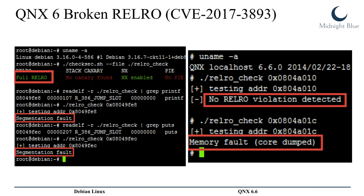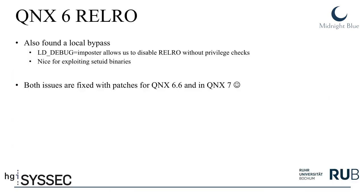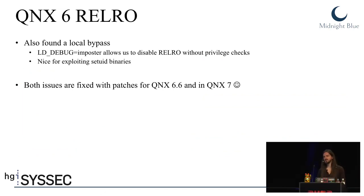In practice: on Debian with full RELRO enabled, you cannot write to global offset table entries; on QNX with full RELRO enabled, you can still write to global offset table entries — that's a broken mitigation. On top of that, we found a local bypass for RELRO via the LD_DEBUG environment variable, which has an undocumented function called 'imposter' that allows disabling RELRO without any privilege checks whatsoever. This is very useful for exploiting vulnerable setuid binaries, which as we saw appear frequently in QNX's history. Both issues were reported to BlackBerry and are now fixed with patches for QNX 6.6 and QNX 7.